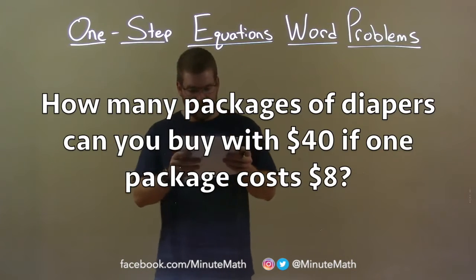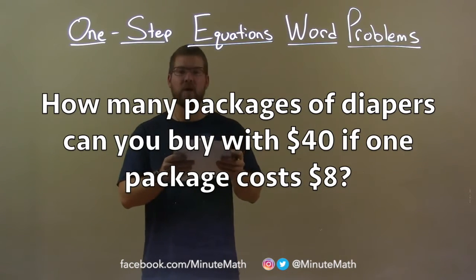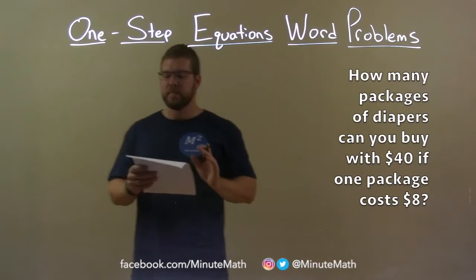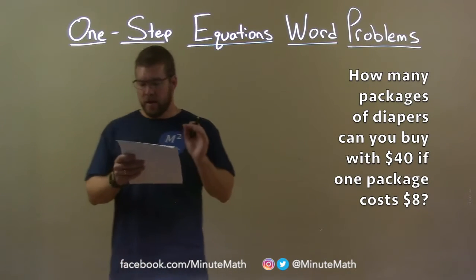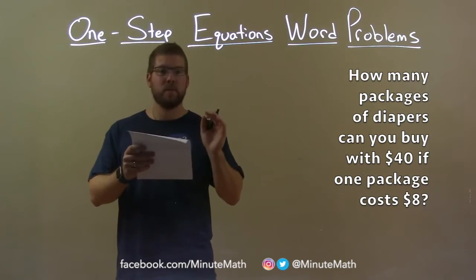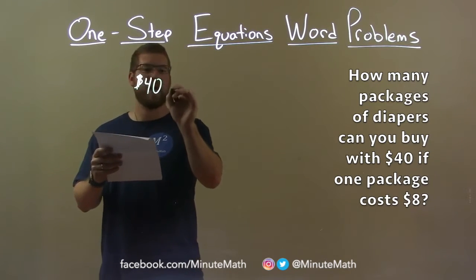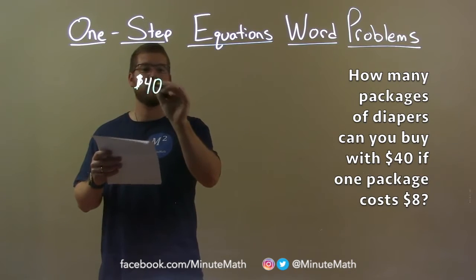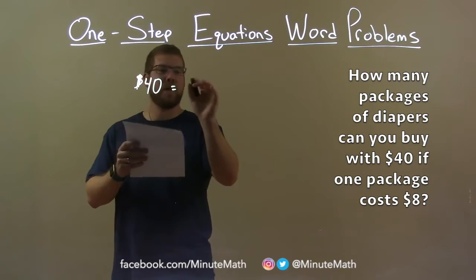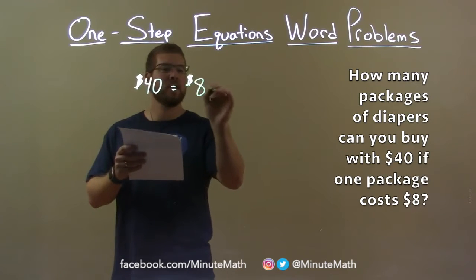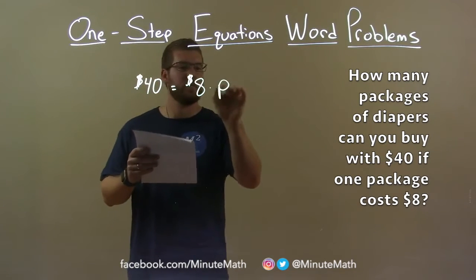How many packages of diapers can you buy with $40 if one package costs $8? We want to set up the equation: $40 equals the cost per package, $8, multiplied by the number of packages, P.